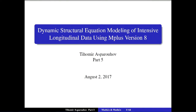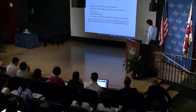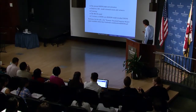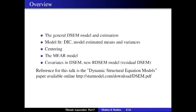In this part five, we're going to talk about the general descent model and the estimation method. I'm going to talk about methods for evaluating model fit using the DIC information criteria and also using the estimated mean and variances. Then we're going to talk about centering, the MIRROR model — the measurement error autoregressive model — and adding covariates in the descent framework. We'll also talk about the new residual descent model, which will be part of version 8.1.